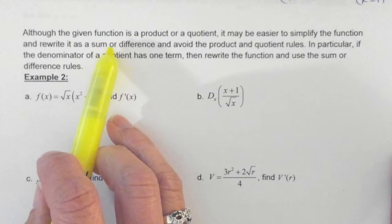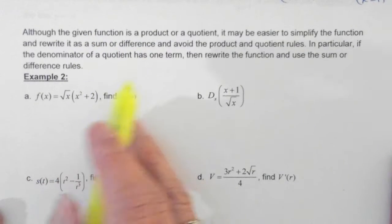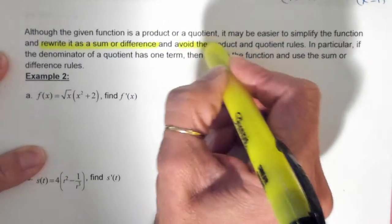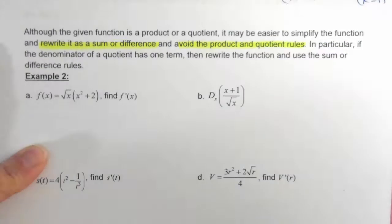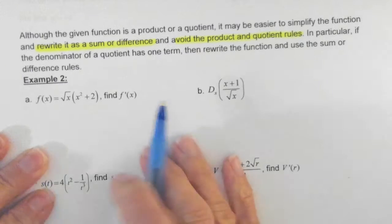So a lot of times, teachers will tell you, you have to do it this way. This is the only way that I'll do it. You can't do it any other way. You have a choice. You need to make the choice that works for you and that is going to work best for you. So it says that although a function, a given function is either a product or a quotient, sometimes it's easier to simplify the function, and you can rewrite as a sum or a difference and avoid using the product and quotient rules. So if you have a sum or difference, basically, remember, the sum and difference of specific terms, all you're doing is taking the derivative of each individual one, whereas in the quotient and product rules, you have to use a specific rule. So it just depends on what you feel is going to work best for you.